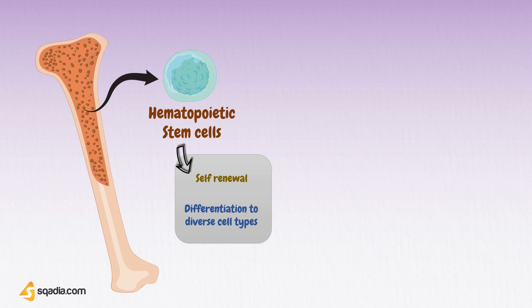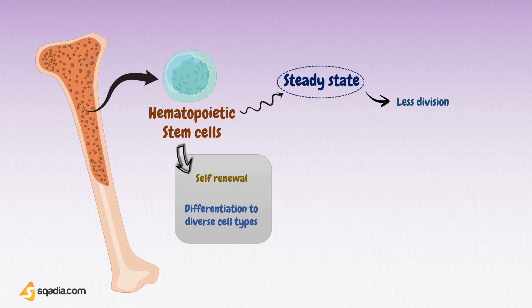The HSCs are the specific stem cells in the bone marrow that ultimately give rise to all types of blood cells. Under steady-state or homeostatic conditions, when the immune system is not being challenged by a pathogen, most HSCs are quiescent and only a small number divide, generating daughter cells.